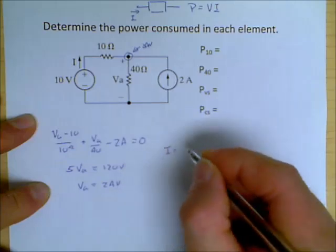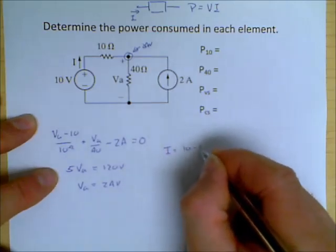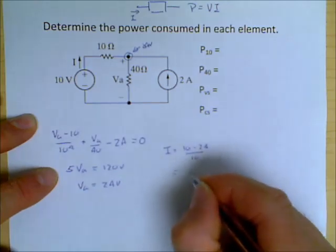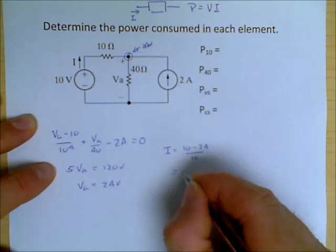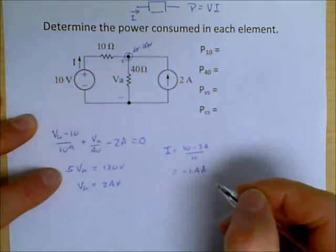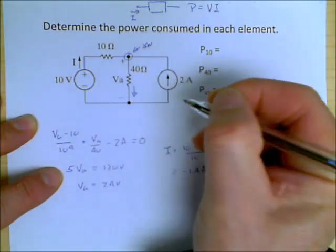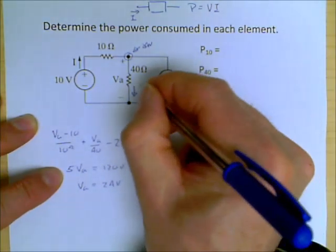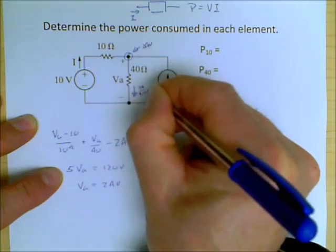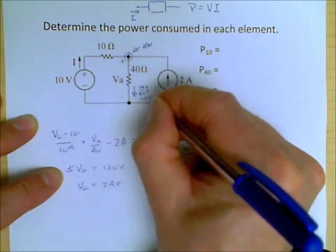I is equal to, in the direction shown, it is 10 minus 24, all divided by 10, which becomes minus 1.4 amps. I can determine the current down through the 40 ohm resistor as being 24 volts divided by 40 ohms, which is equal to 0.6 amps.